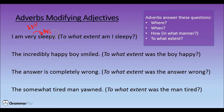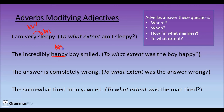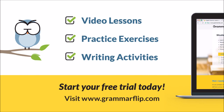In the next sentence, we might say 'the incredibly happy boy smiled.' Again, look for your adjectives in that sentence. If we know that 'happy' is an adjective here, then we can start to look for any adverbs that might be modifying it.